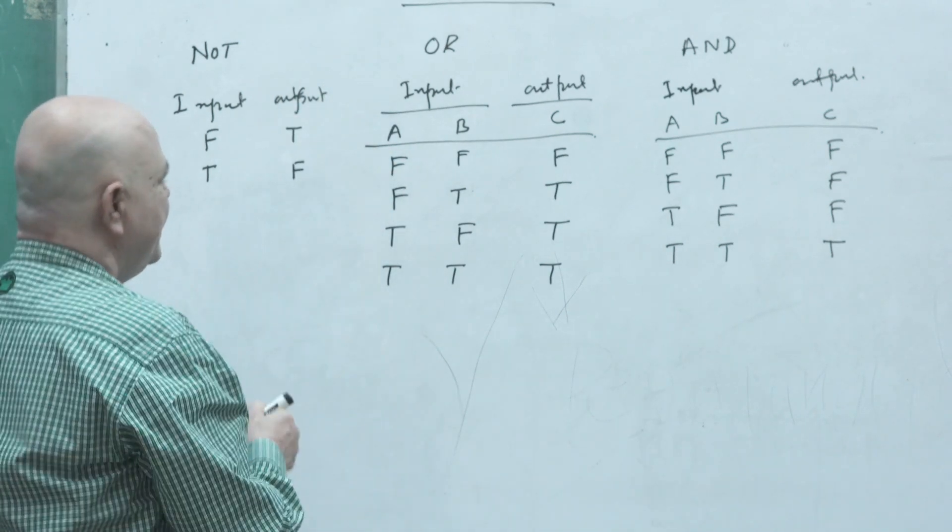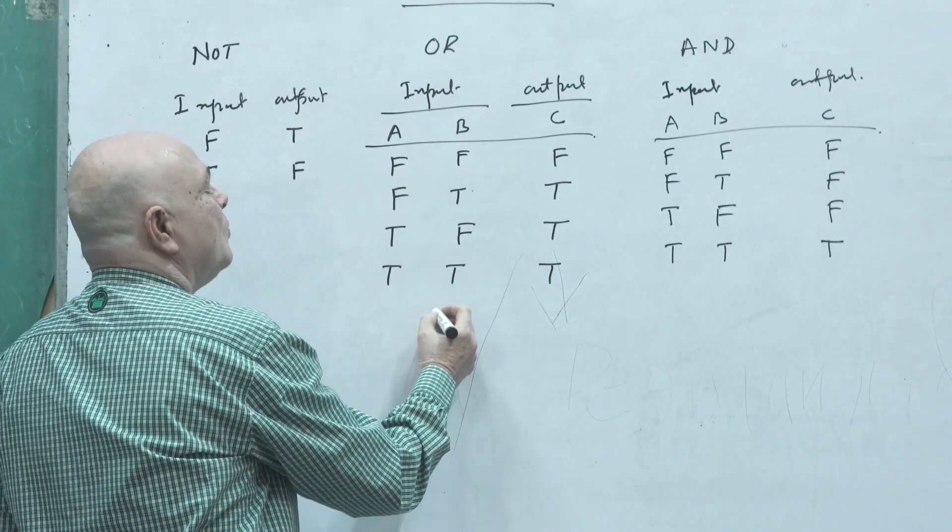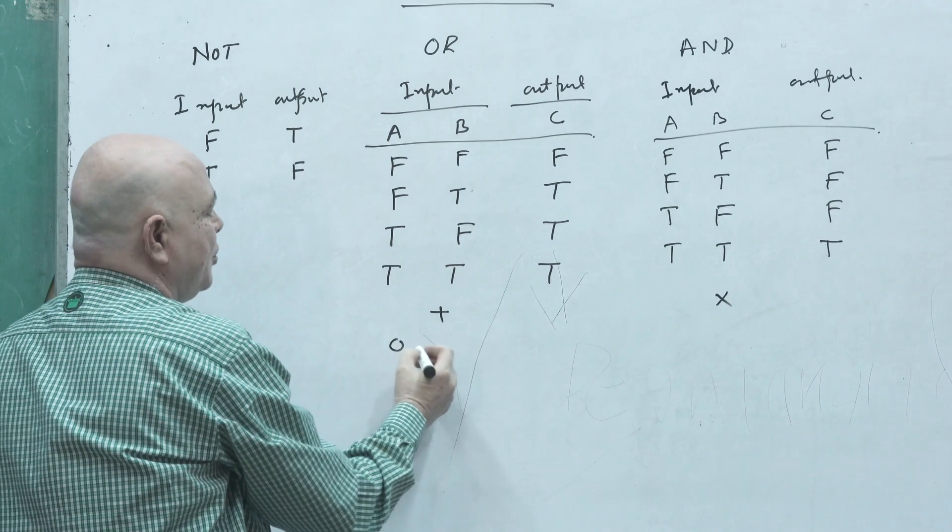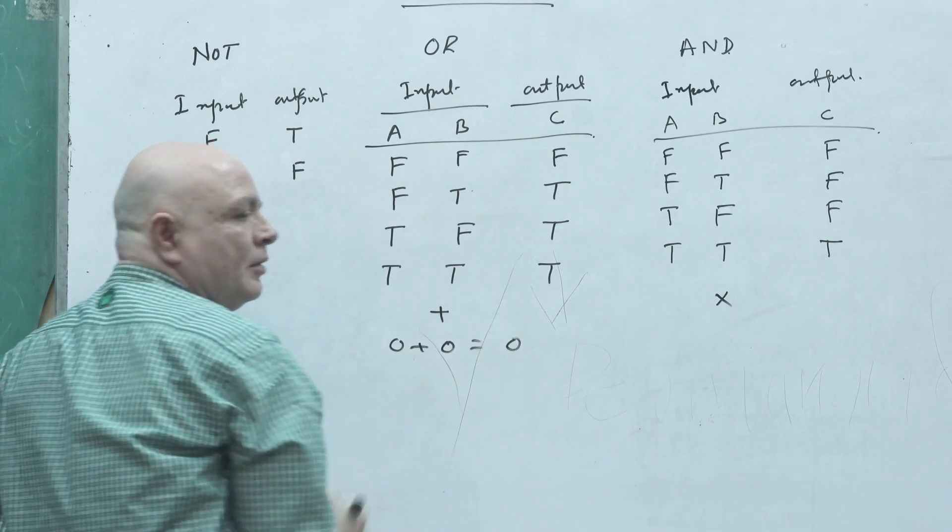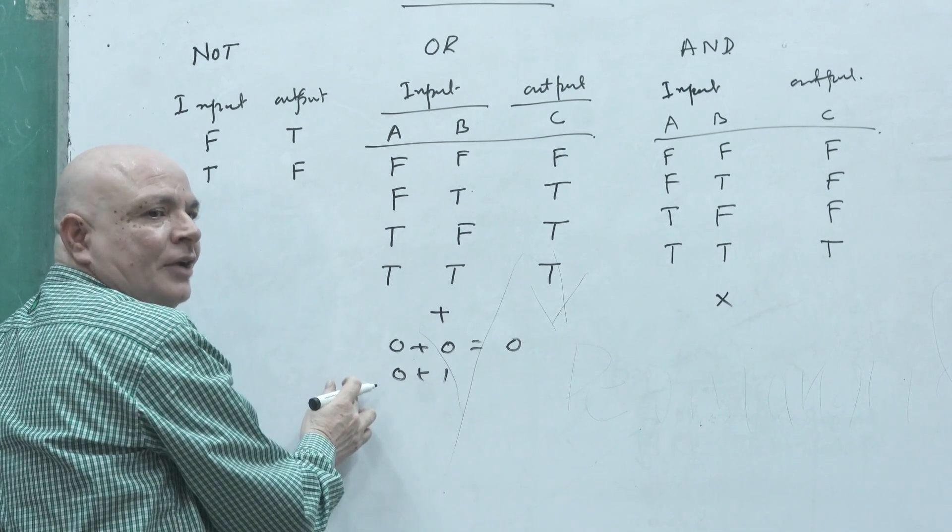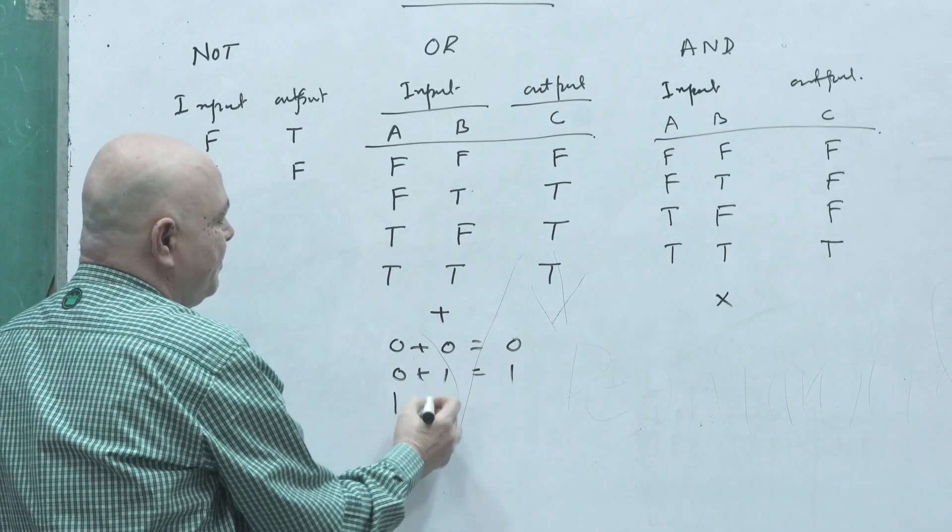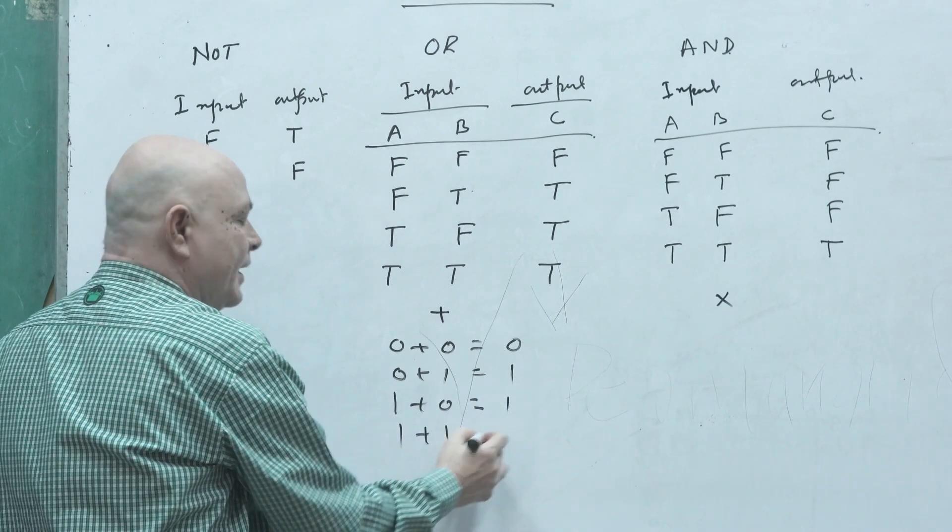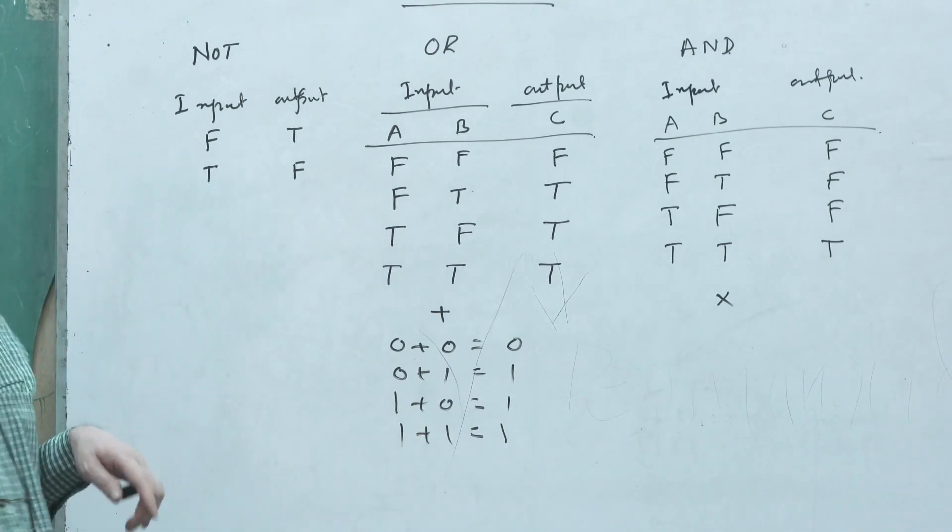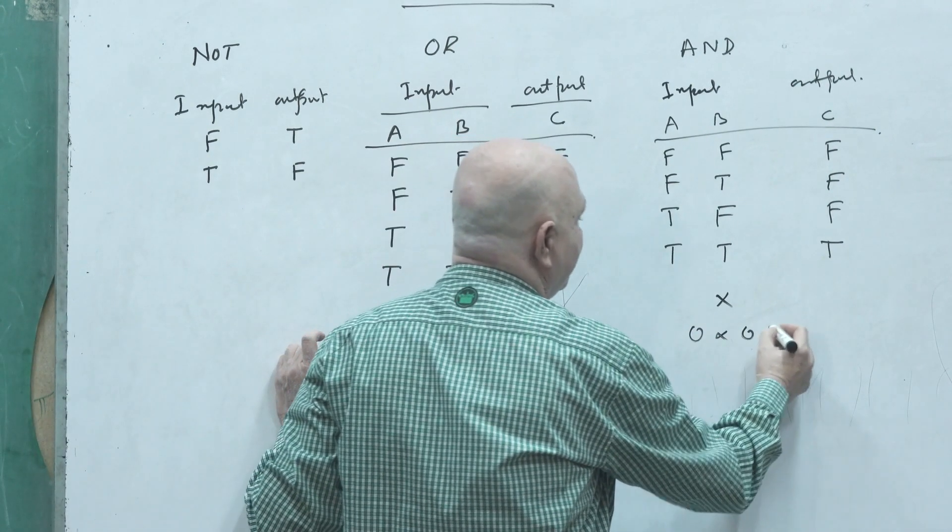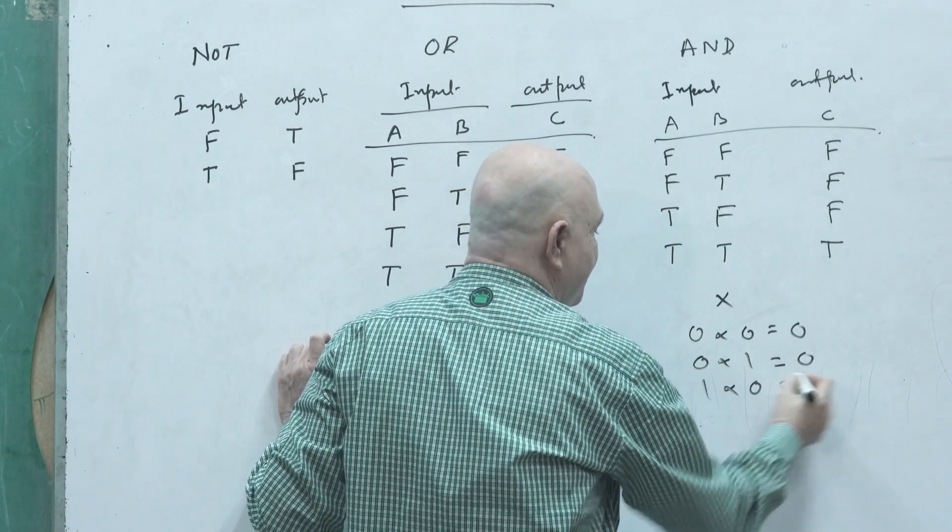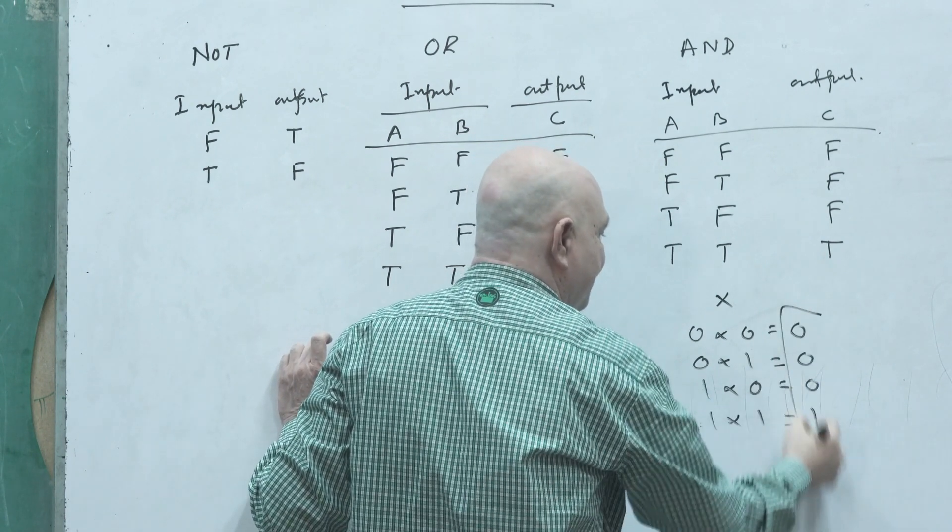So normally we are saying this is addition and this is your multiplication. If we are saying zero plus zero it will be? Zero plus one. True means one, false means zero. It will be one. One plus zero equals to? One plus one. Again there will be one is there, so we are considering it is true. But over here zero into zero, zero into one, one into zero, one into one.